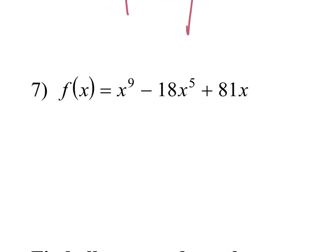Let's go to seven. What term are we looking at here? X to the nine. Is this positive or negative? Positive. So it's positive and it's going to end going up. Is it even or odd? Odd. So they're going to go in opposite directions. So how's it going to start? Down and up. Remember, if it's positive, it's always going to end going up. So if it's positive, you're going to end on a positive note. And if it's negative, it ends going down.